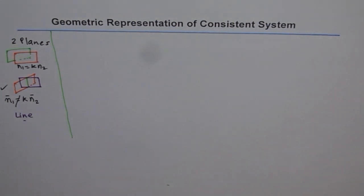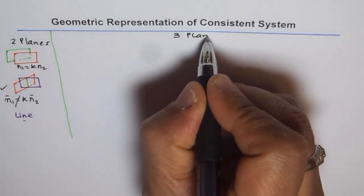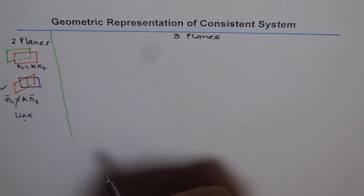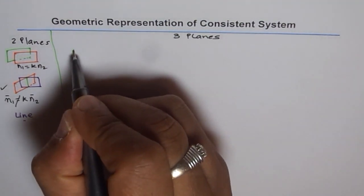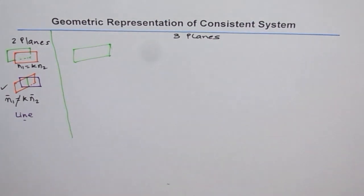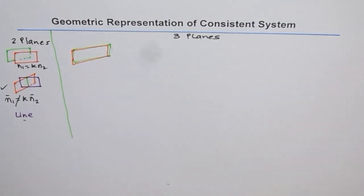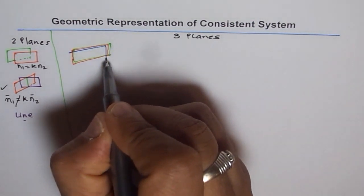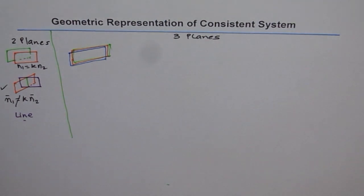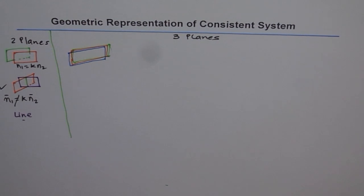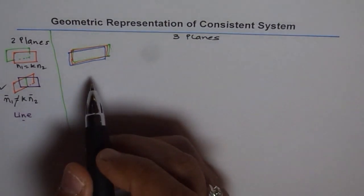Now let's consider three planes. In three planes there could be different scenarios. First, the three planes could overlap — we have three planes, one over the other, like this. One, two and three. In this case the three planes are actually the same plane. If the three planes are exactly the same, then they have a solution. The solution is the plane itself; every point is a solution to this system. The system is consistent — all three planes overlap, one over the other.